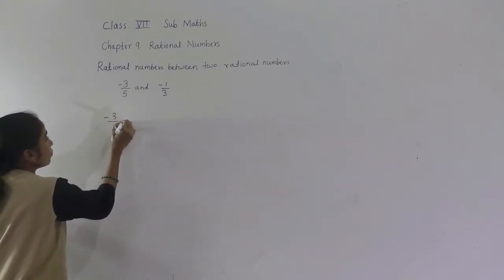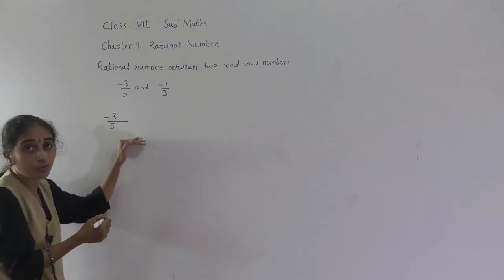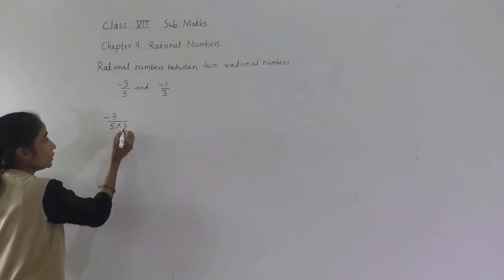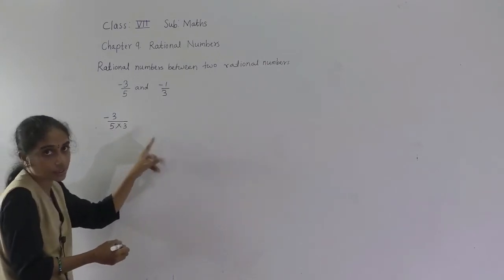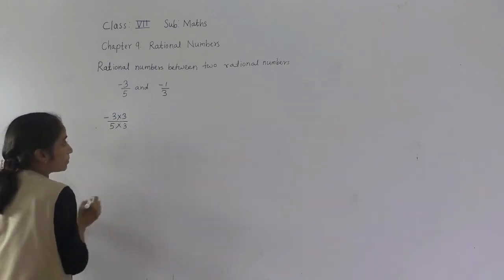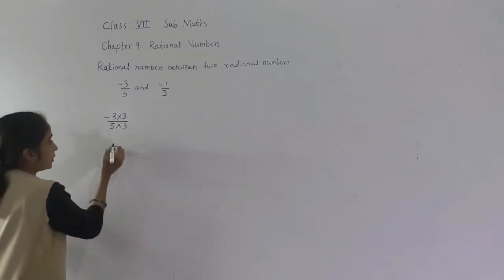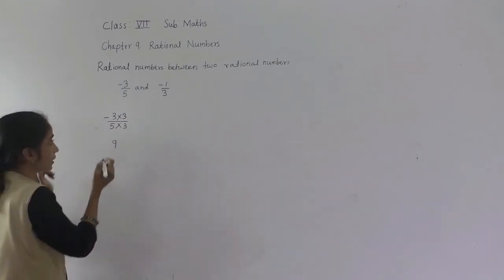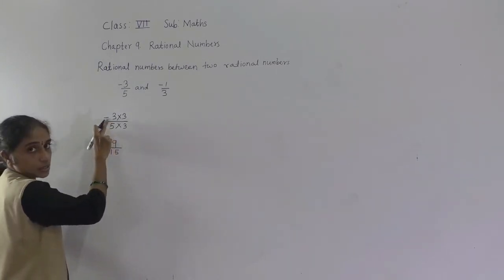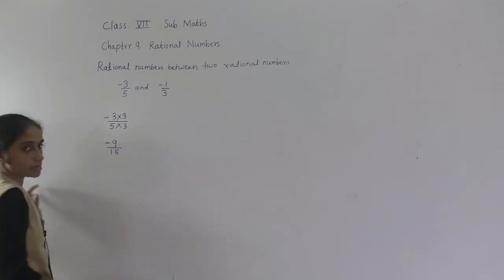For minus 3 upon 5, multiply both numerator and denominator by 3 to get denominator 15. 3 threes are 9, 5 threes are 15. Since one number is negative and one is positive, the product is negative. So we get minus 9 upon 15.